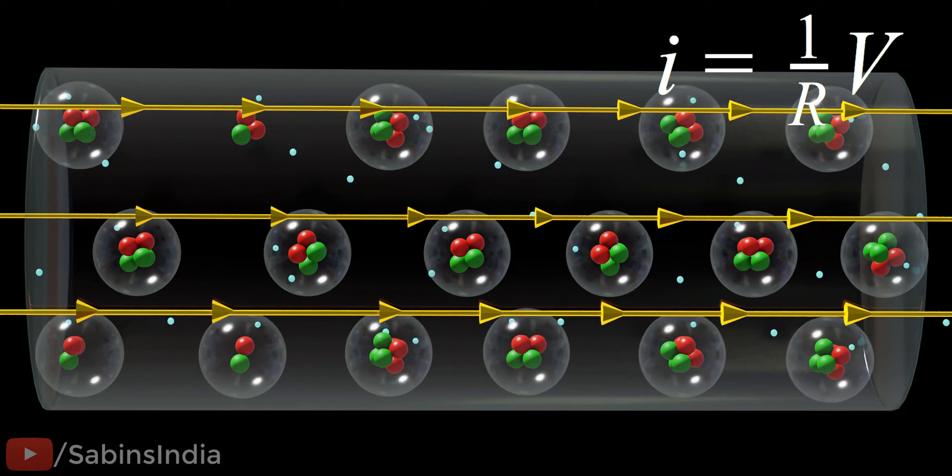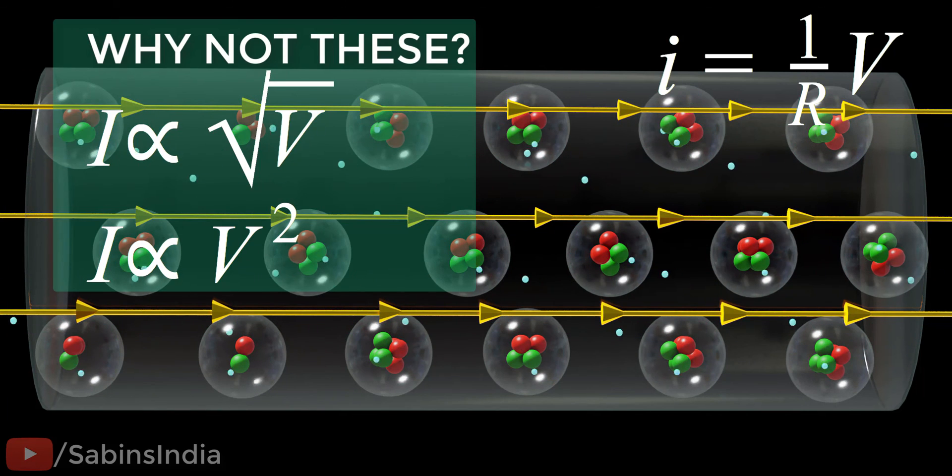When your teacher teaches this topic, just ask him, what's the proof of Ohm's law? Why not the relationship between the voltage and current be anything like these?